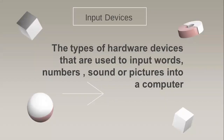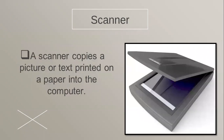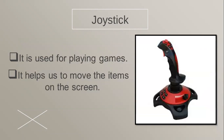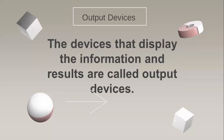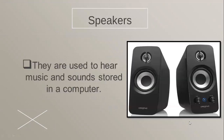Input devices are used to give input to your computer, like a trackball which is a kind of mouse, scanner, webcam, and joystick. Output devices are used to get results from the computer — they work exactly opposite to input devices. With input devices we give data to the computer; with output devices we take results. Examples include monitor, printer, and speakers.